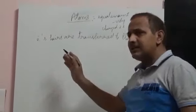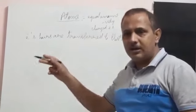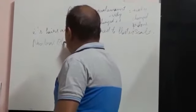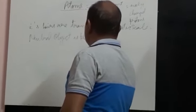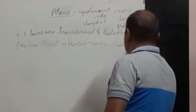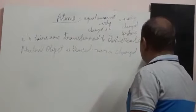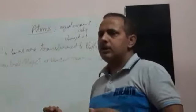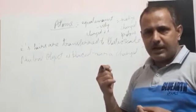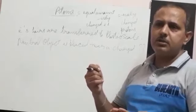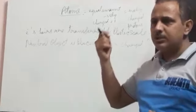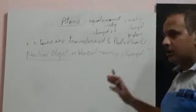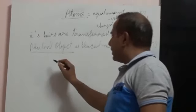We know like charges repel and unlike charges attract. But what happens when a neutral object is placed near a charged object? You can find the answer by rubbing a scale with your hair and using it to attract small pieces of paper. Those pieces of paper are neutral, yet they are attracted by the charged scale. So charged objects also attract neutral objects.